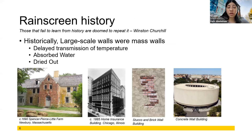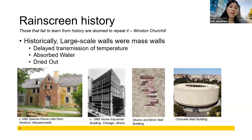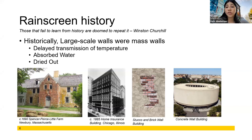I promised a history lesson — I'll keep it brief and interesting. This is generally how we were constructing buildings until more recently: mass wall construction. The idea was to build a ginormous wall so there would be no transmission of moisture or temperature from the exterior to the interior and vice versa. What we actually ended up doing was building a giant thermal bridge. We did not have transmission all the way through, but we had it partway through the wall where the dew point was and moisture would hang out there.